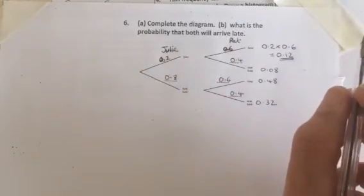But the probability that they are both late is 0.2 times 0.6, which is 0.12.